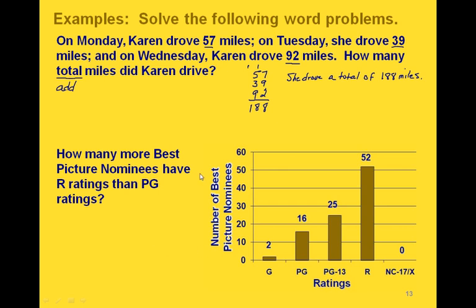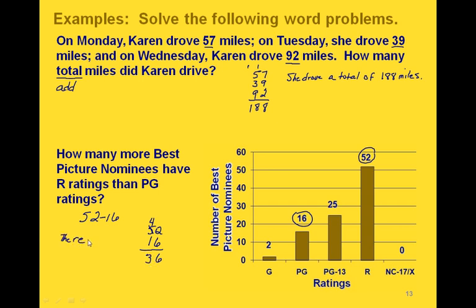Finally, we have a bar graph showing the number of Best Picture nominees divided up by their different ratings. The question is: how many more Best Picture nominees have R ratings than PG ratings? Looking at those two, the R ratings had 52 and the PG ratings had 16. So to find how much more 52 is than 16, we subtract: 52 minus 16. We borrow, getting 12 minus 6 is 6 and 4 minus 1 is 3. Our answer is 36 — there were 36 more Best Picture nominees with R ratings than PG ratings.